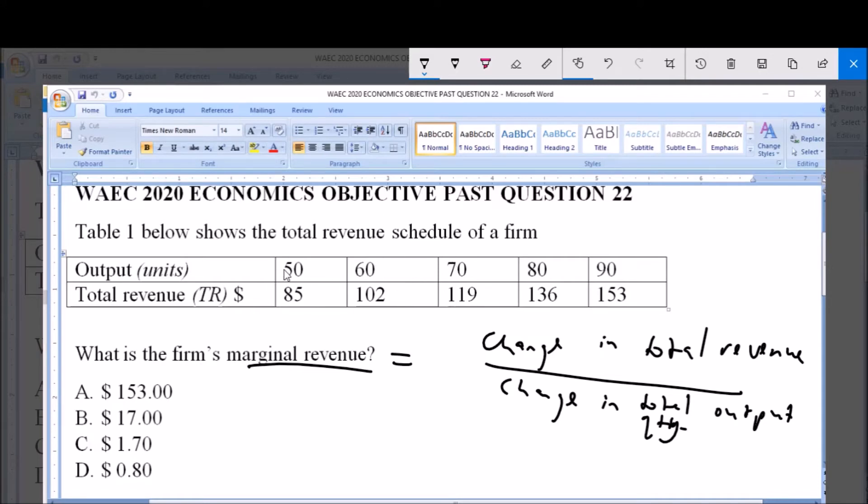For example, I can choose to make use of 50 and 60. I can choose to make use of this other category, any two successive values. So let me make use of 50, 60, 85, 102.